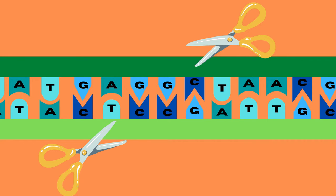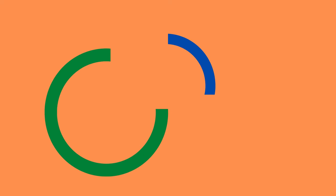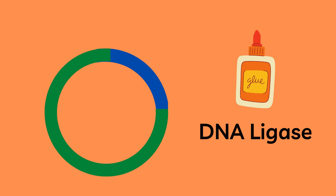By using restriction enzymes to cut this circular DNA at two specific points, one can create two sticky ends that are complementary to the DNA of interest, allowing for much easier binding of the gene of interest to the plasmid.